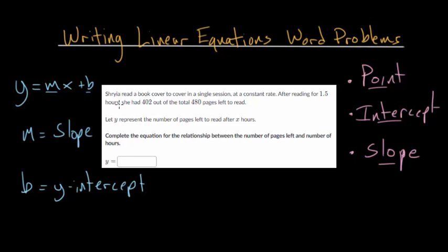So let's jump into the problem. I apologize, I might mispronounce this, but let's go with Shria read a book cover to cover in a single session at a constant rate. So I'm underlining this because that's the hallmark of a linear equation, that the rate, or in this case the slope, is constant. It doesn't change. In fact, if the rate did change, it would be a curvier looking graph rather than just a straight line. So after reading for 1.5 hours, she had 402 out of the total 480 pages left to read.